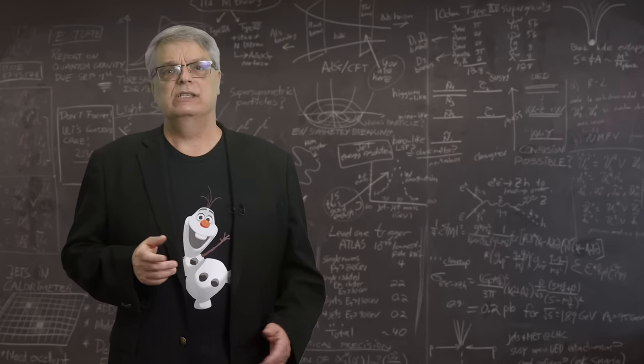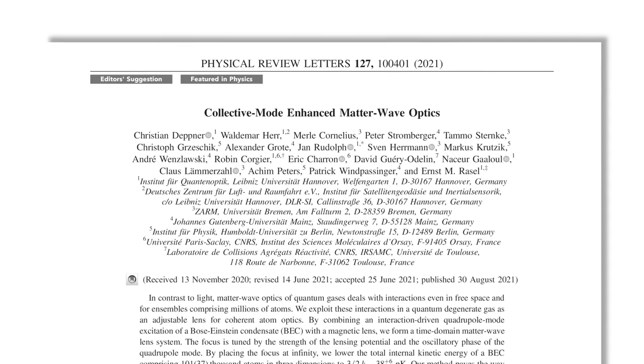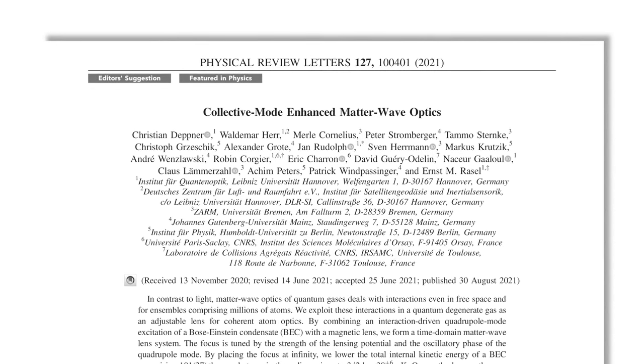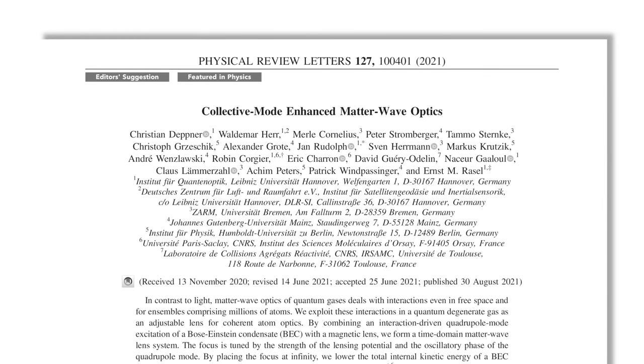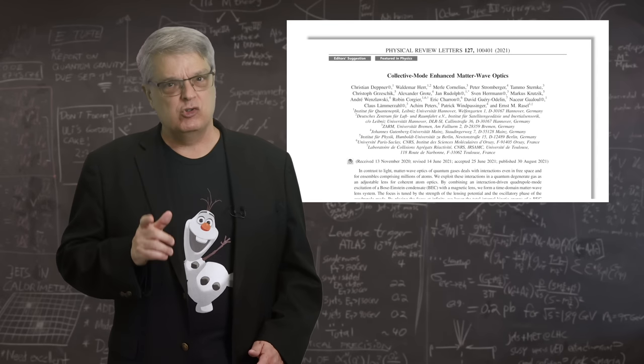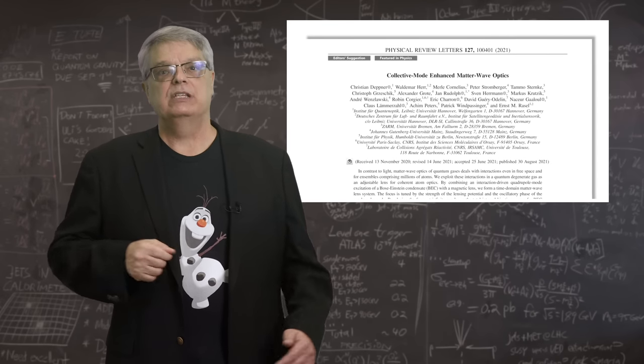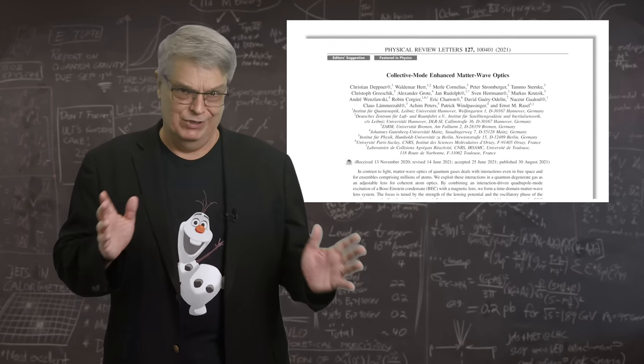And the current record is held by a group of European scientists who in 2021 used every trick in the book to cool 100,000 rubidium atoms to 38 picokelvin. That's 38 trillionths of a kelvin. They held the temperature for about 10 seconds. That's just ridiculously cold.